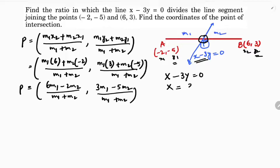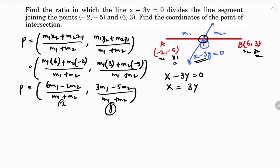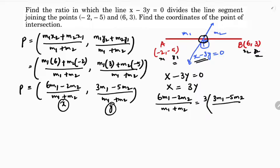Since there is no constant, write the line as x equals 3y. This way there is no need to take LCM — we can directly cancel the denominators. Substituting: (6m1 - 2m2) / (m1 + m2) = 3 × (3m1 - 5m2) / (m1 + m2). The denominators m1 + m2 cancel.